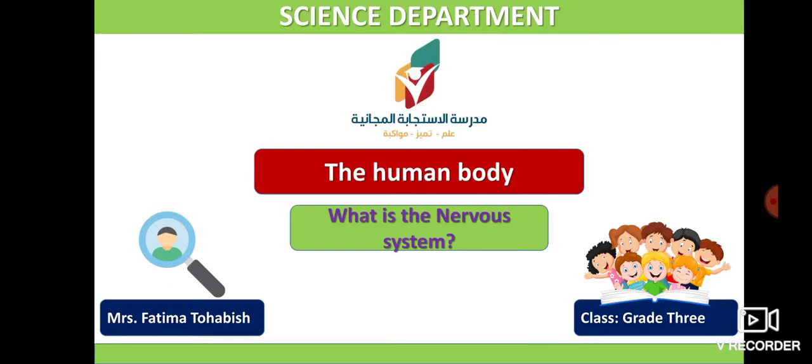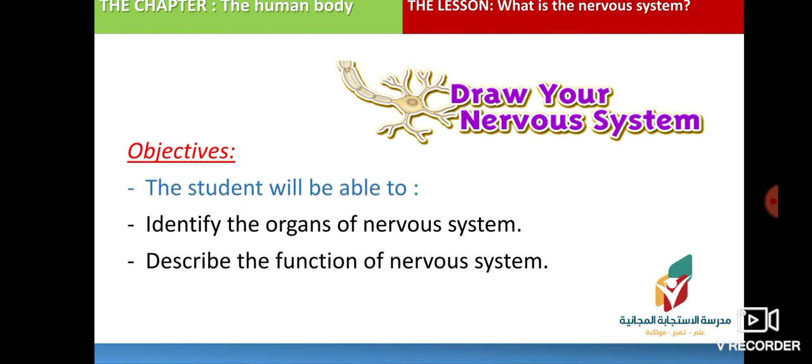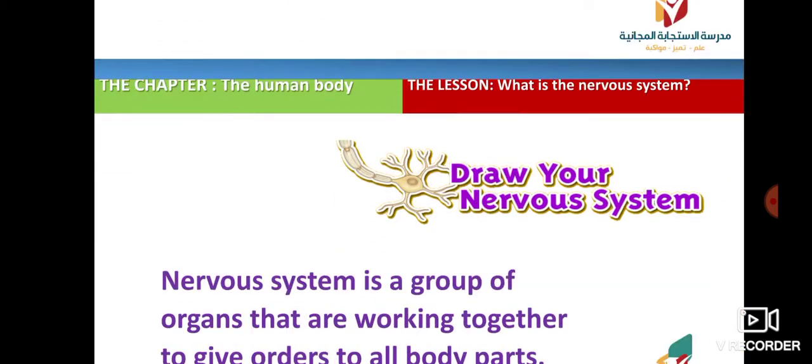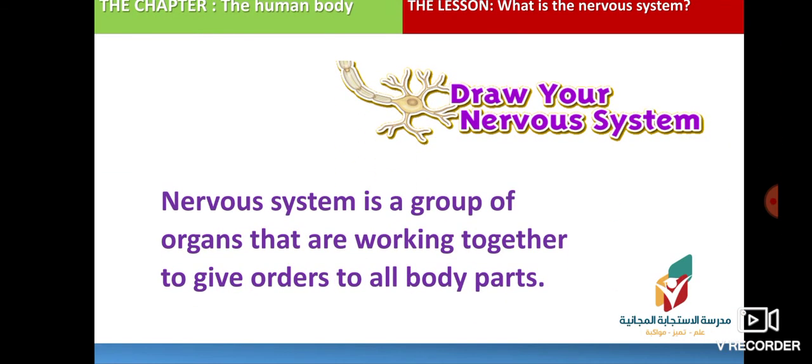Hello learners, how are you today? Our lesson is about the nervous system. The objectives of this lesson are that the student will be able to identify the organs of the nervous system and describe the function of the nervous system.